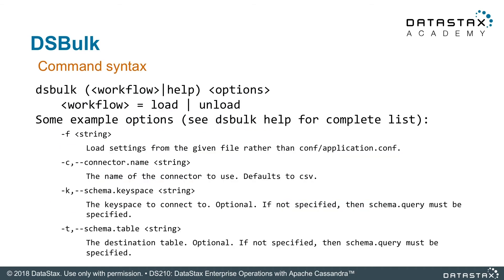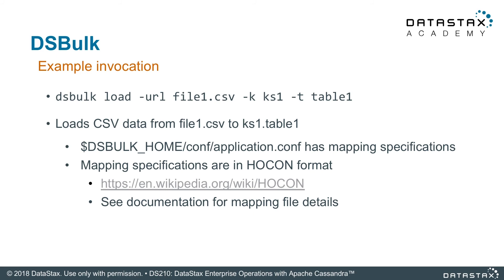If you see the command syntax here, it's very much oriented around the command line — there is no graphic utility for this. DSBulk takes lots of different flags. At its most simple, you can tell it to load or unload and give it a file name. In this example, I'm loading a file from a CSV into keyspace one, table one. It'll take that CSV file and load it into your table. The mapping specifications are stored in the application.conf file, and you can map out really complicated things or keep it simple. We follow the familiar Hocon format, which you can find in many places — it's not just specific to DSBulk. It's a pretty simple but very powerful tool that should be in your toolbox when developing with DataStax Enterprise.